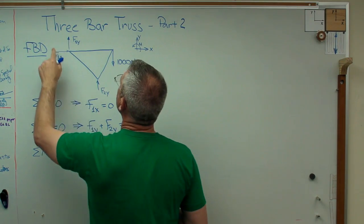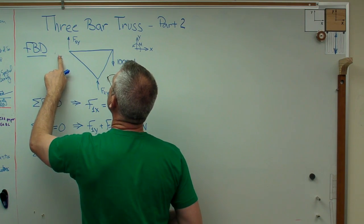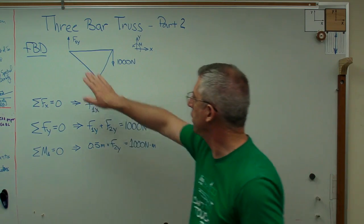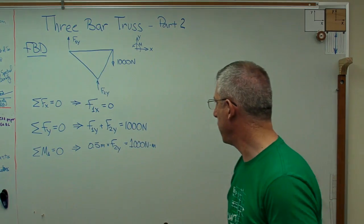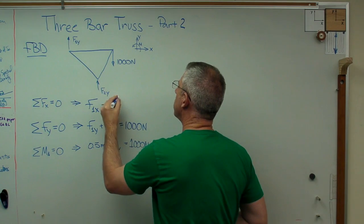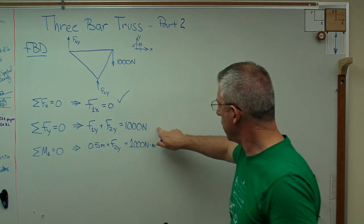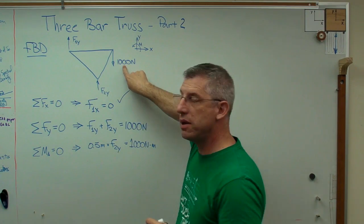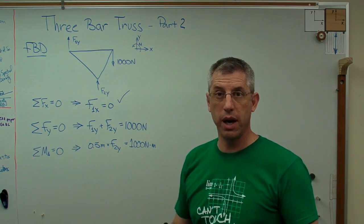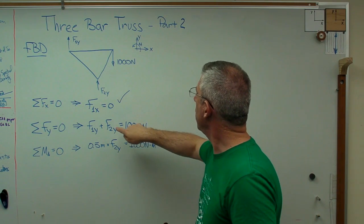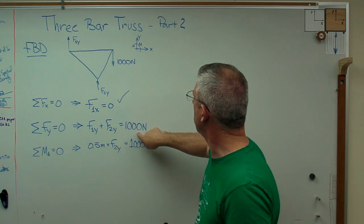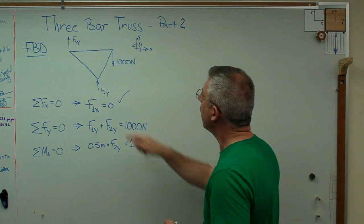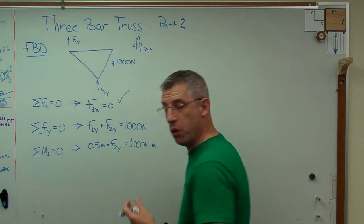Now, we already knew that f1x equals zero. So I'm going to take that off the free body diagram because we know it is zero and we don't need to account for it anymore. The next one is we know f1y plus f2y minus that, which is minus since it goes against the positive sign convention, equals zero. Or if you put the thousand newtons on this side, you get a thousand newtons equals that plus that.